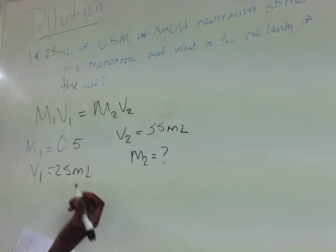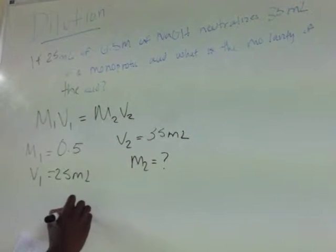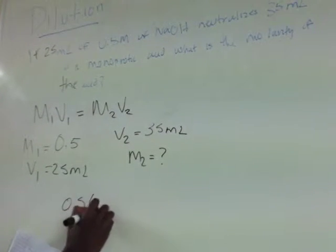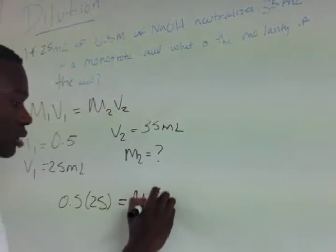Then we just do a little algebra. 0.5 times 25 equals M2 times 35.